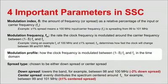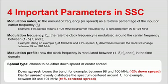Finally, the spread type is either chosen to be downspread or center spread. Downspread expands the clock frequency to lower the band — for example, from 98 to 100 megahertz, with the carrier frequency being 100 megahertz at 2% downspread.